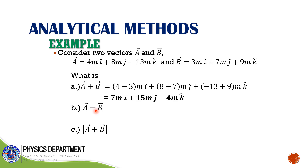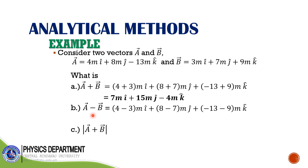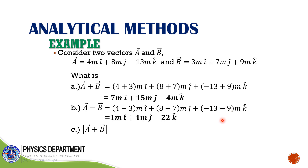How about A minus B? Minus B is just the negative vector of B. So we have (4 minus 3) i-hat plus (8 minus 7) j-hat plus (negative 13 minus 9) k-hat, giving us A minus B equal to this result.